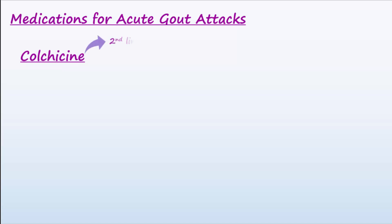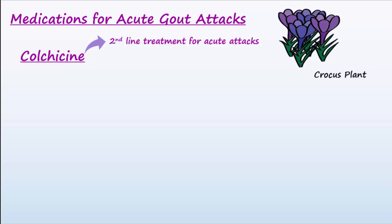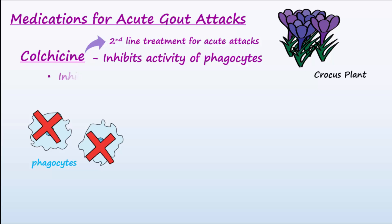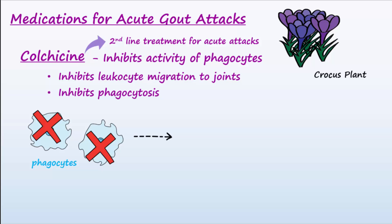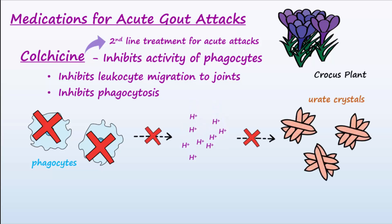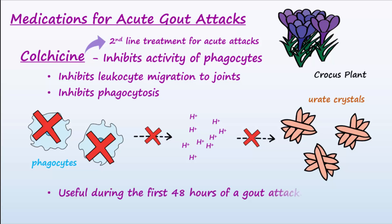Like NSAIDs, colchicine is also used for acute attacks, but is considered second-line treatment. Colchicine comes from the crocus plant. Colchicine inhibits the activity of phagocytes by inhibiting leukocyte migration and phagocytosis. These actions decrease the release of acids from the phagocytes into the joints, which prevents additional accumulation of urate crystals. Colchicine is useful during the first 48 hours of a gout attack, and also acts as an anti-inflammatory.